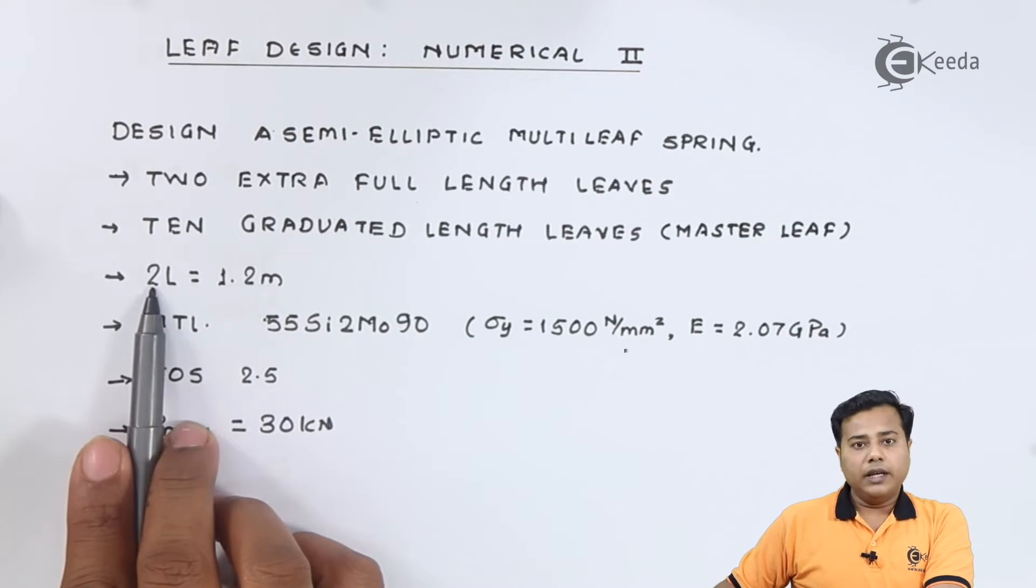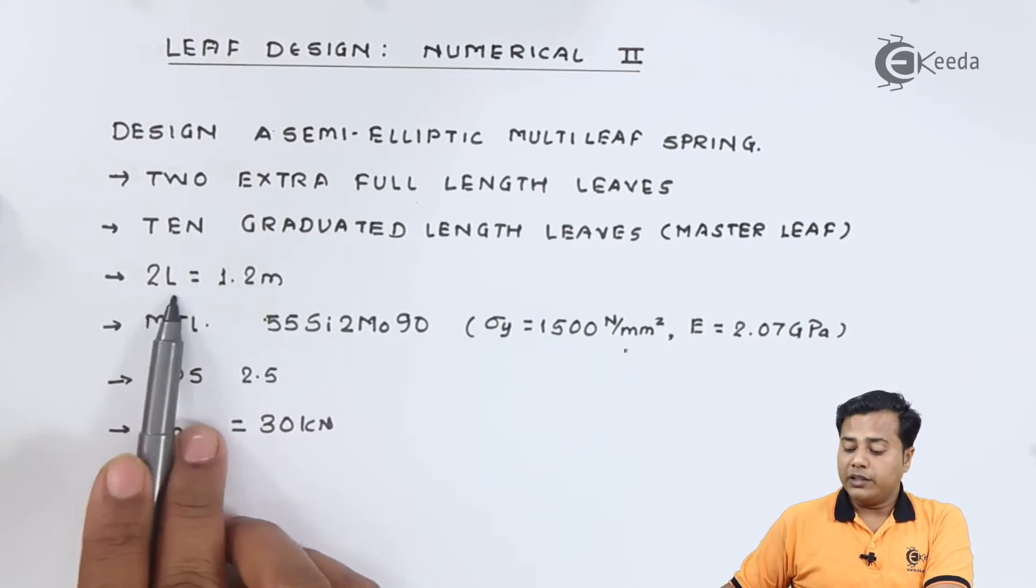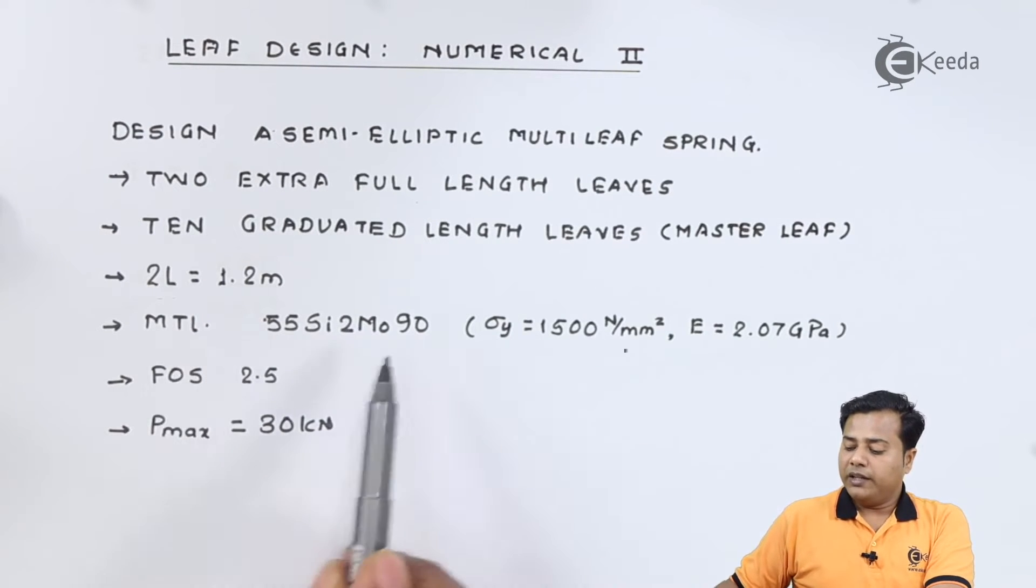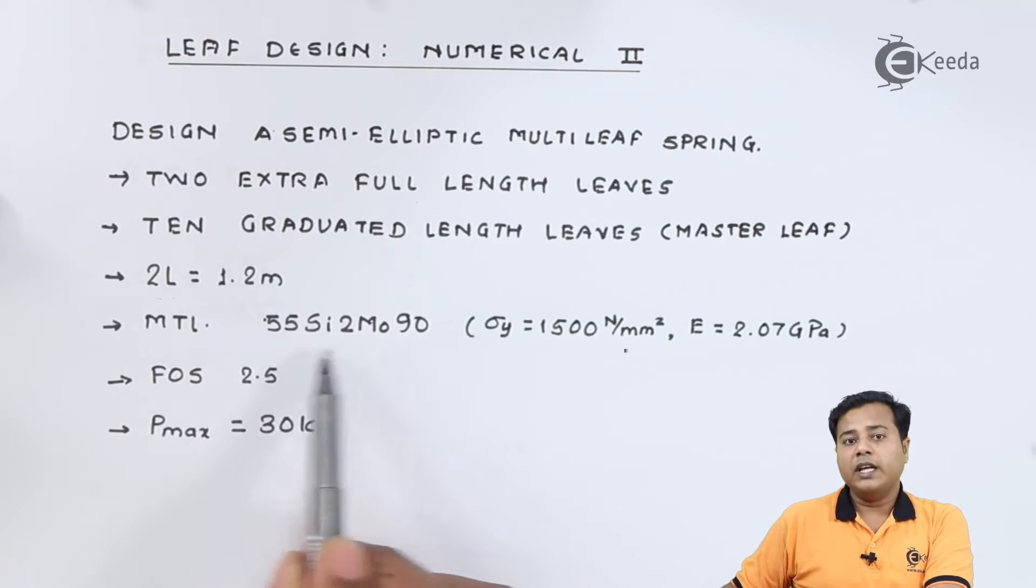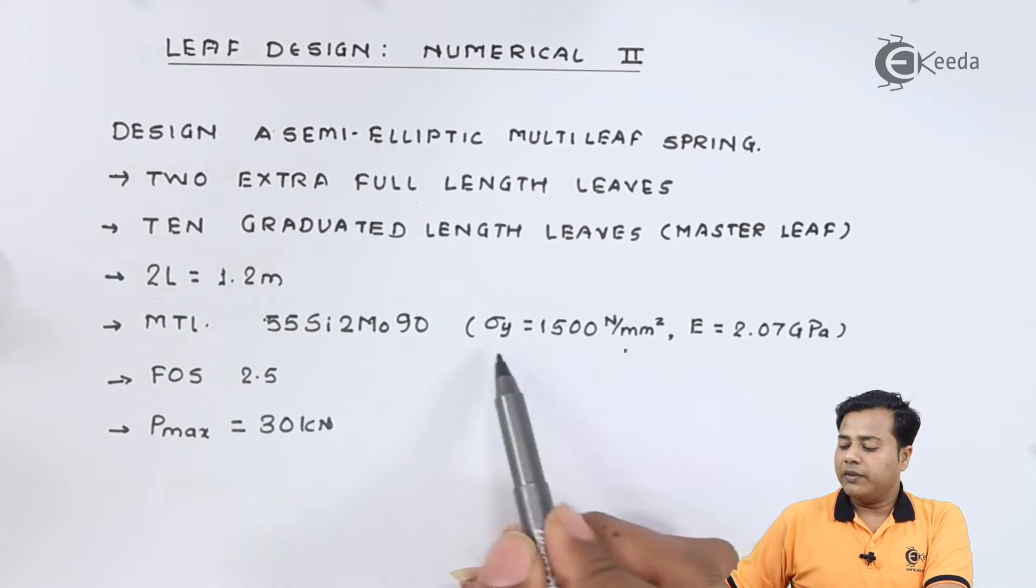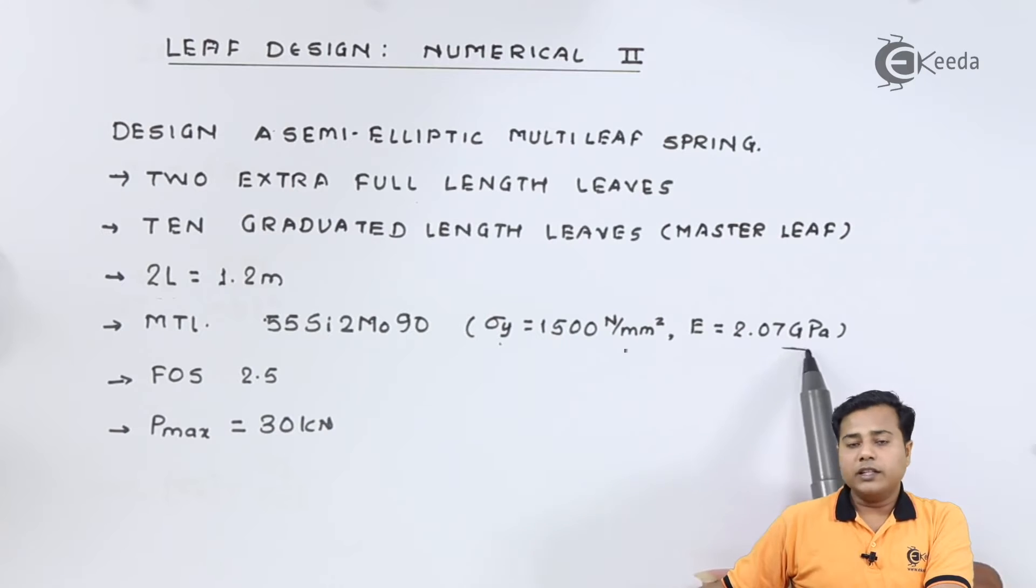Then the length, center to center length is given 1.2 meter. We know that center to center length is designated by 2L. The material is also specified which is the alloy of silicon and molybdenum with stainless steel. It further has given the yield property of the material and the Young's modulus.